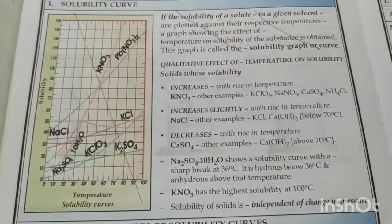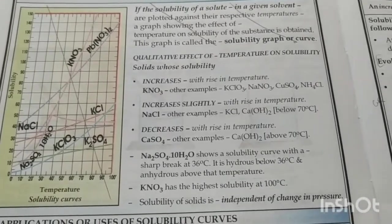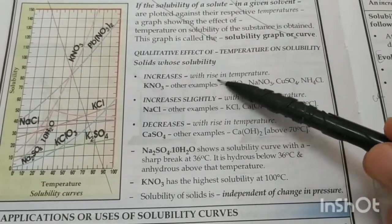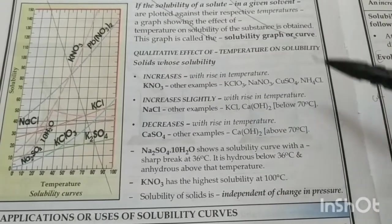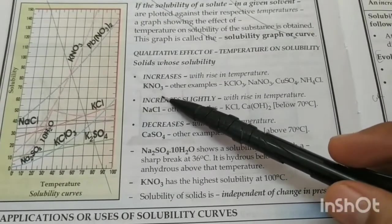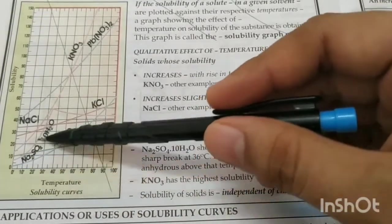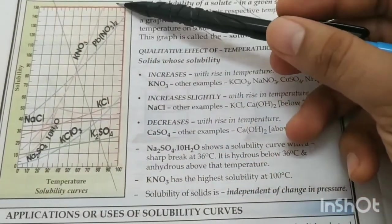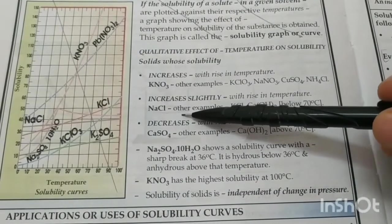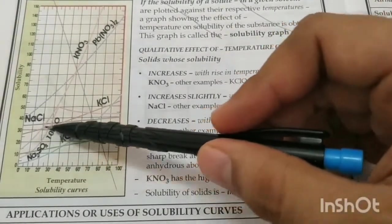Let's study the qualitative effect of temperature on the solubility of solids. Some salts show increasing solubility with rising temperature — potassium nitrate is the best example, and its solubility curve rises steeply. Sodium chloride, on the other hand, shows only a slight increase in solubility with temperature, so its graph is almost a flat line.